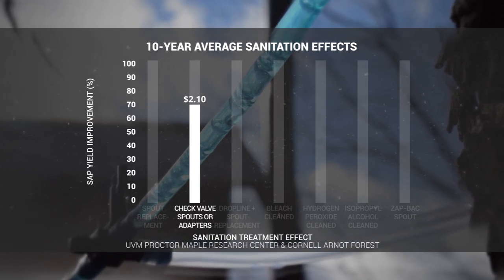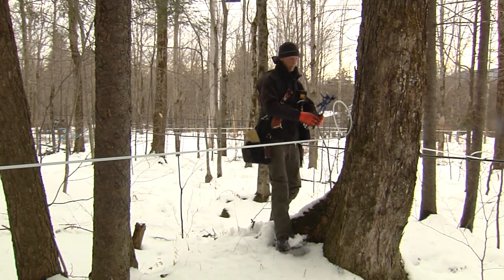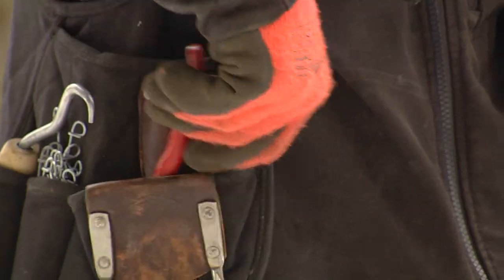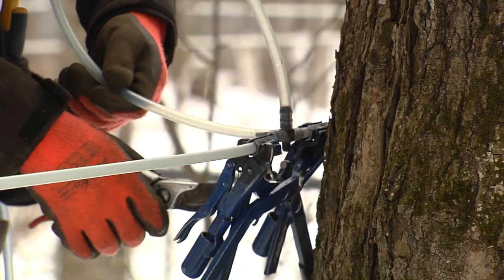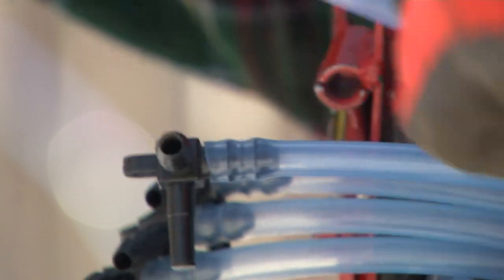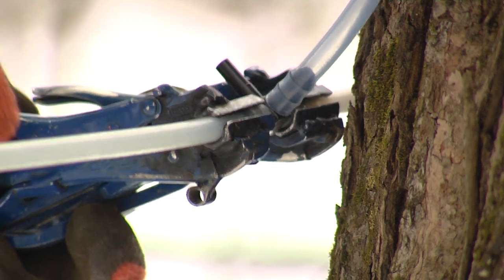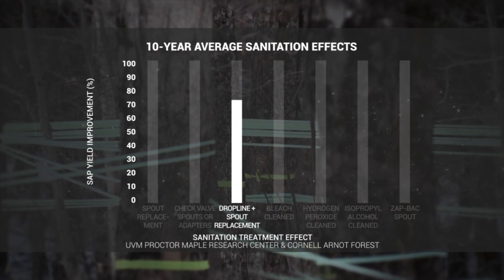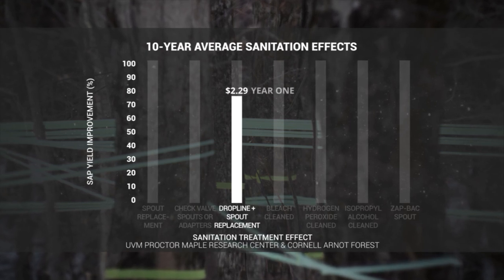Another advantage of check valves is that drop lines do not need to be periodically replaced. The final replacement strategy involves changing the drop line and spout. By changing both of these, producers put new material where nearly 90% of sanitation problems occur. In the first year of replacing drop lines and spouts on an older system, producers will see a nearly 75% improvement in yield and a net profit of $2.30 per tap.